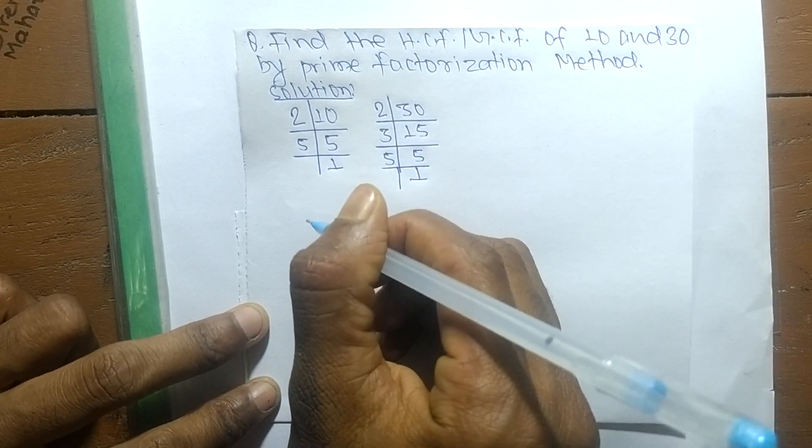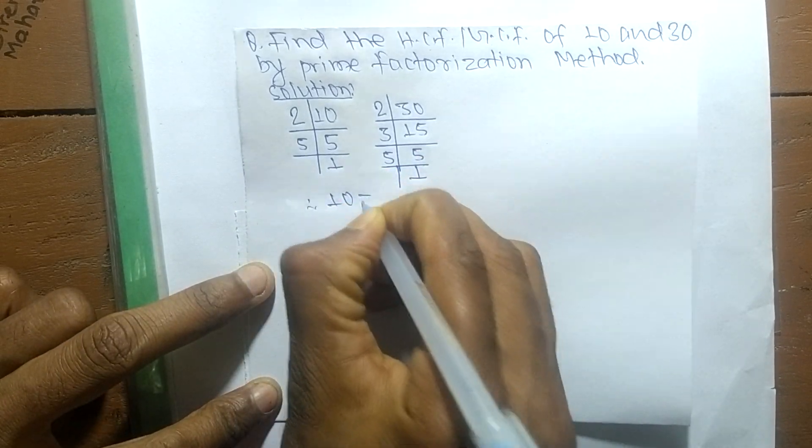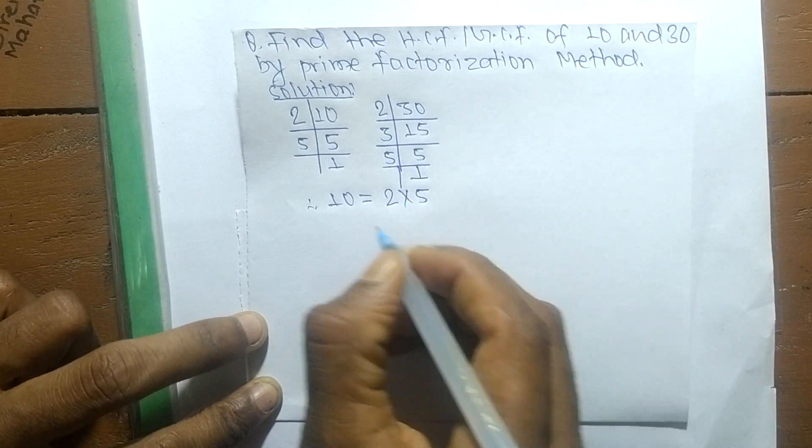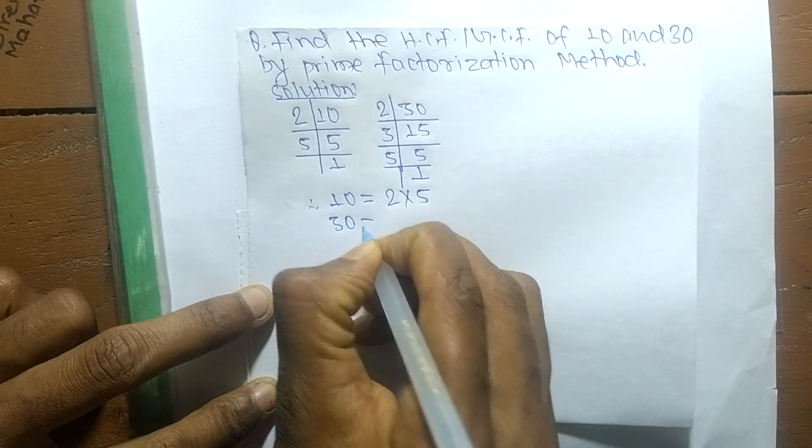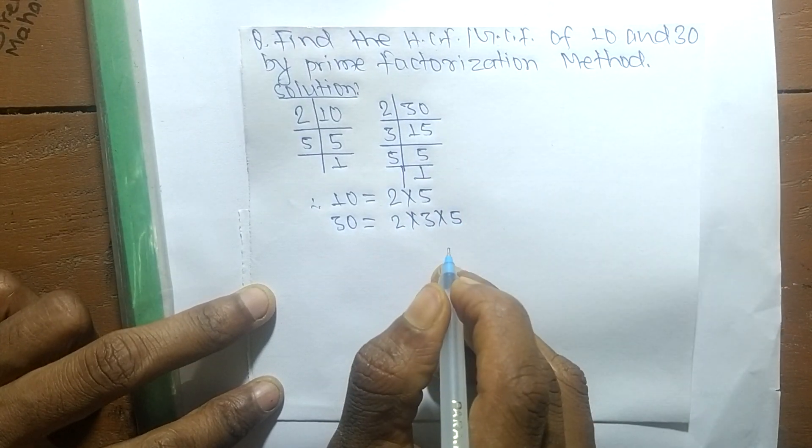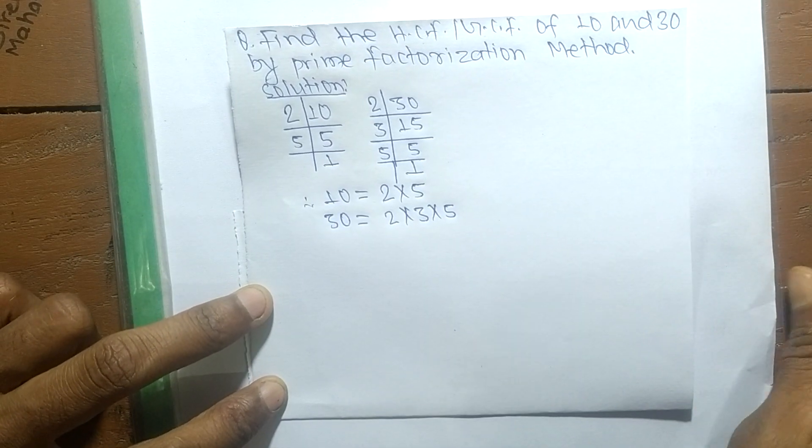After finding out the prime factors, we can write 10 equals 2 into 5. Likewise, 30 equals 2 into 3 into 5.